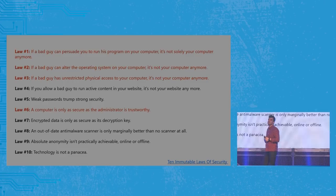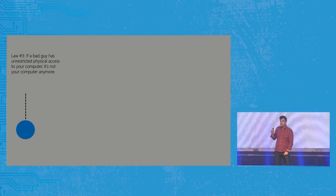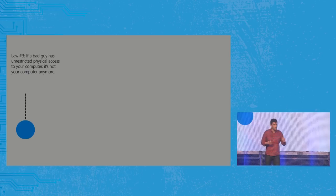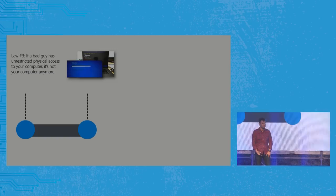Looking at one law: 'If a bad guy has physical access to your machine, it's not your machine anymore.' We muddied the waters there by saying there's BitLocker and Secure Boot — mitigations designed to stop bad guys — so how can you call it an immutable law but produce a feature that claims to fix that problem? Super confusing.